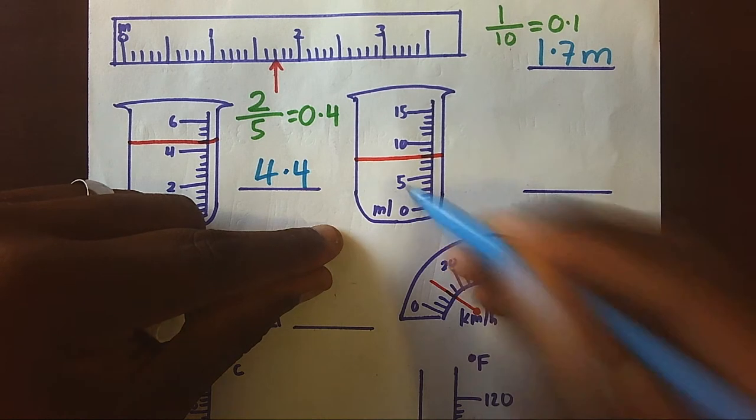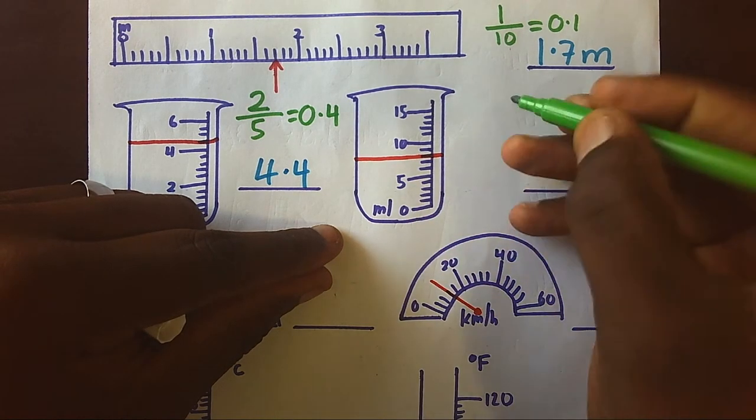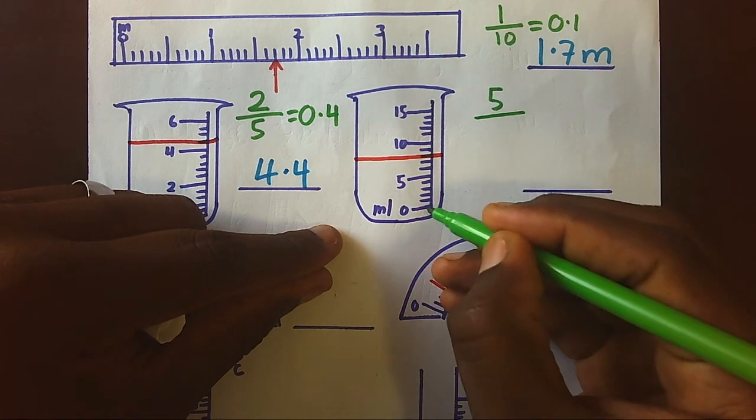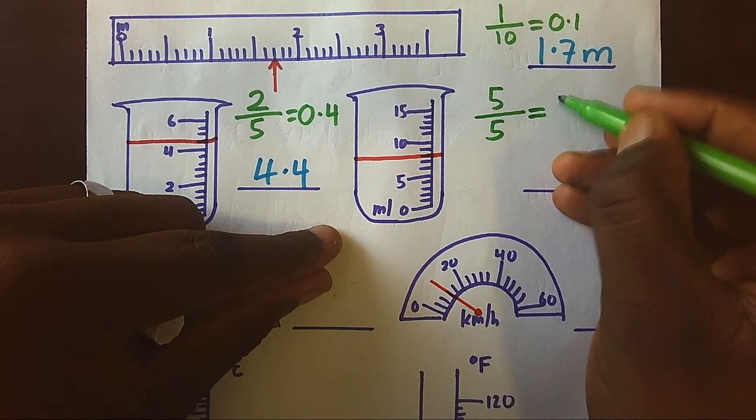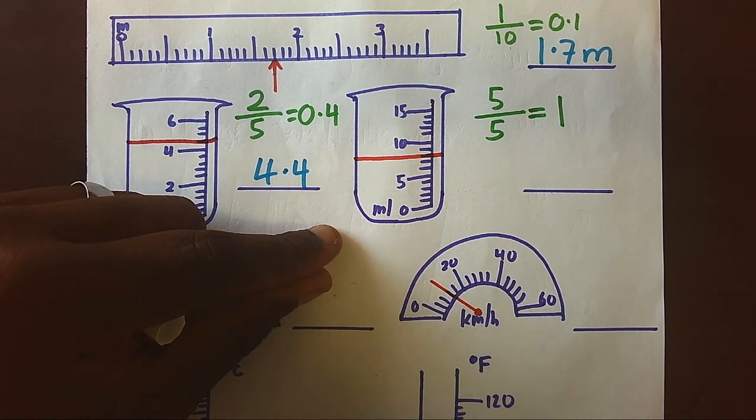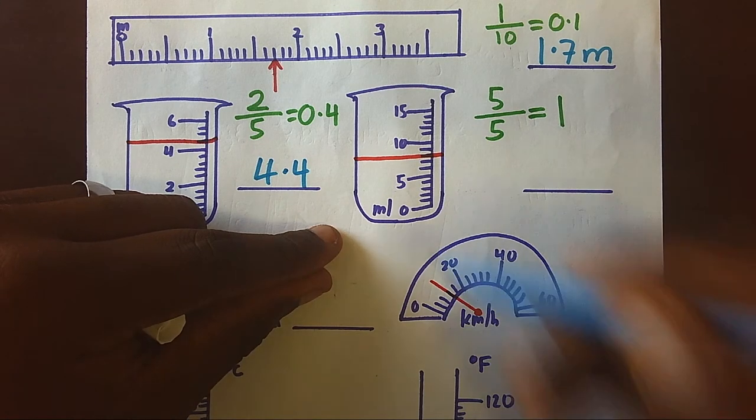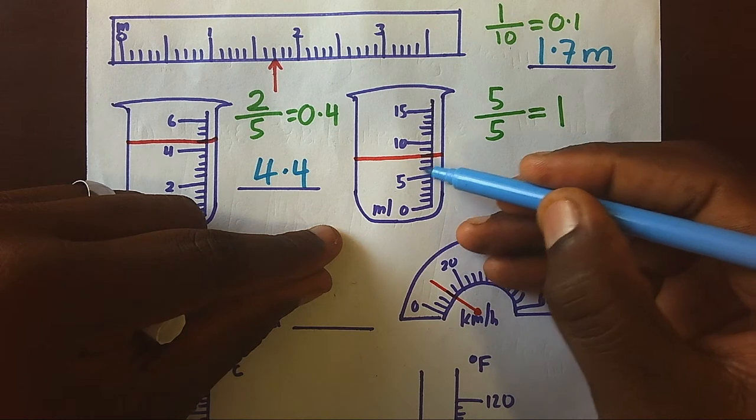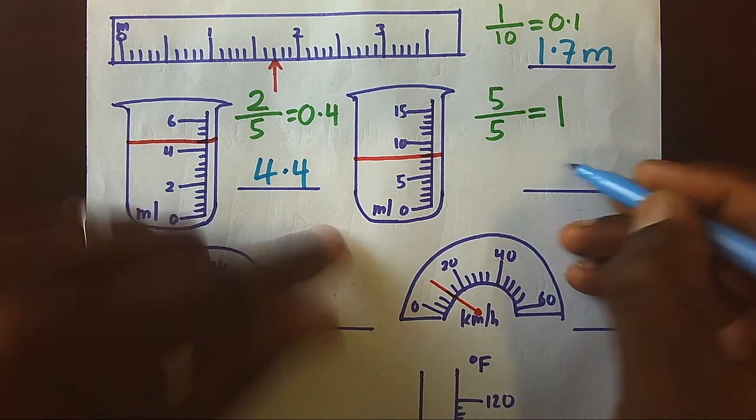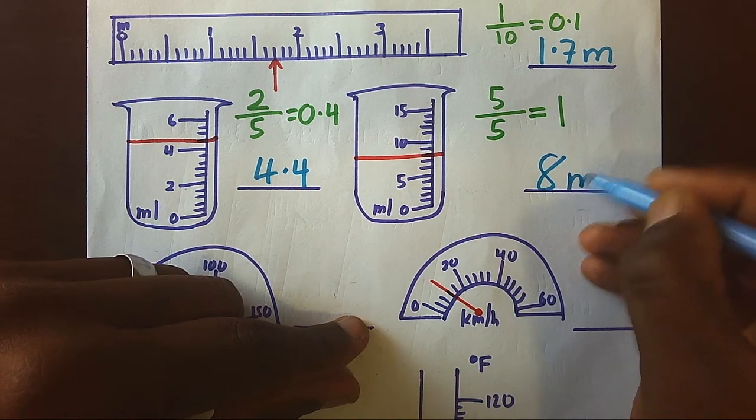Main reading is five, and the spaces are five, meaning each space will carry one full unit. Hence zero, one, two, three, four, five, six, seven, eight. This would be 8 milliliters.